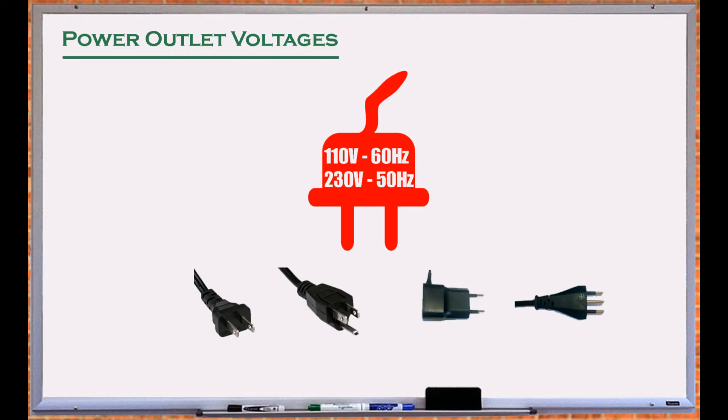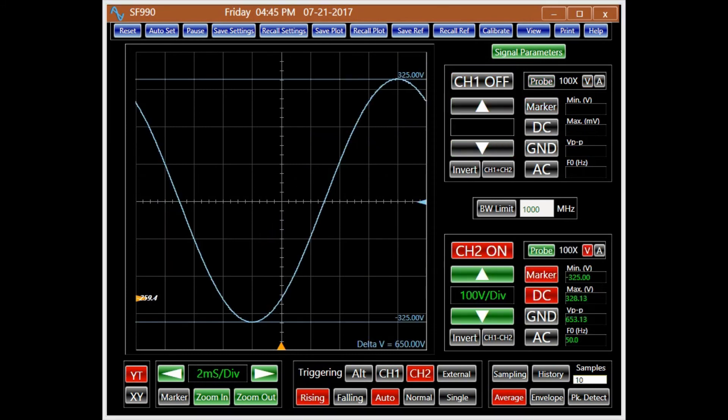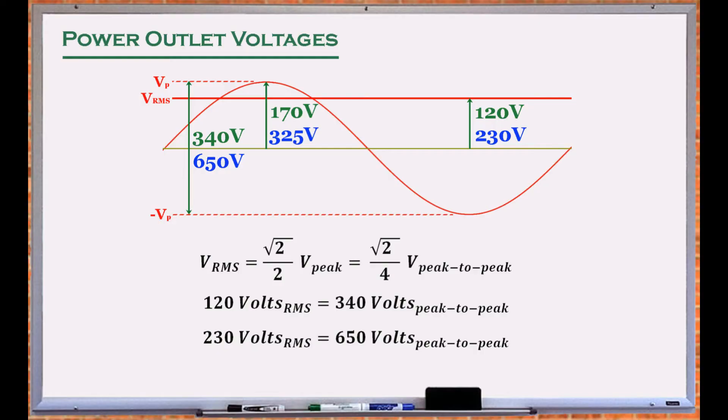When measuring electrical outlets in the US, we observe a sine wave with a peak-to-peak value of 340 volts, corresponding to 120 volts RMS. In countries with 230 volts outlets we measure a 650 volts peak-to-peak sine wave. Note that these lines are never referred to by their peak-to-peak or peak value since what really is important is the amount of delivered power.